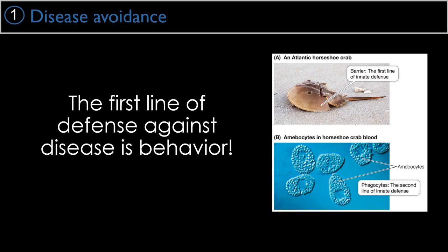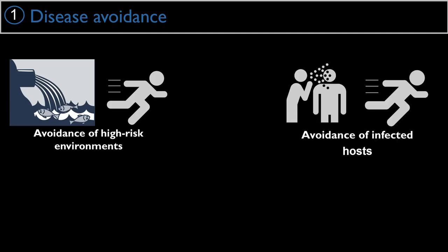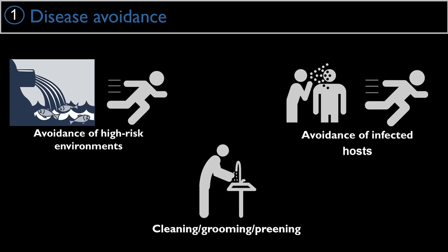Avoidance of disease can arise in a couple of ways. You can avoid high-risk environments — if there's evidence that other animals are dying of something infectious, you can avoid that environment. You can avoid other infected hosts using sights, sounds, and smells. And even if you encounter something, you can clean or groom yourself as a behavioral defense against parasites.